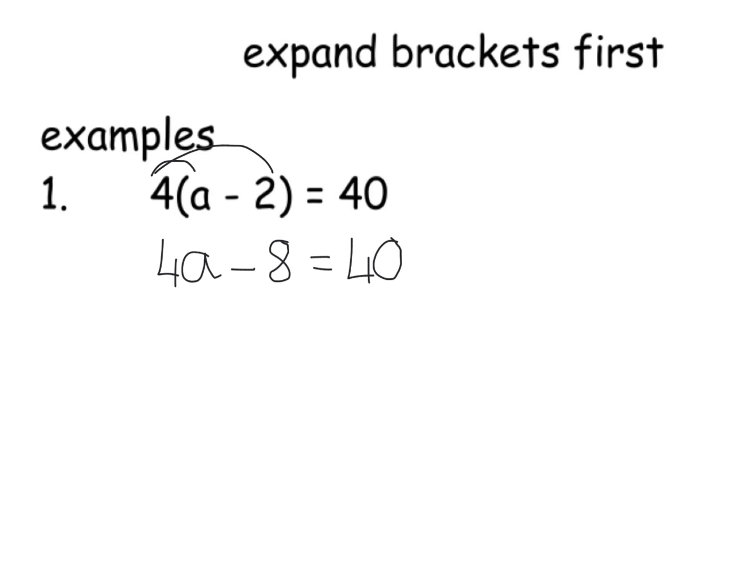To get that to disappear, I have to counteract it. So I have to add 8 to each side of my equation, because that will then make the number on the left-hand side a 0. So it will leave me with 4a. 8 and minus 8 have gone, and then 40 plus 8 is 48.